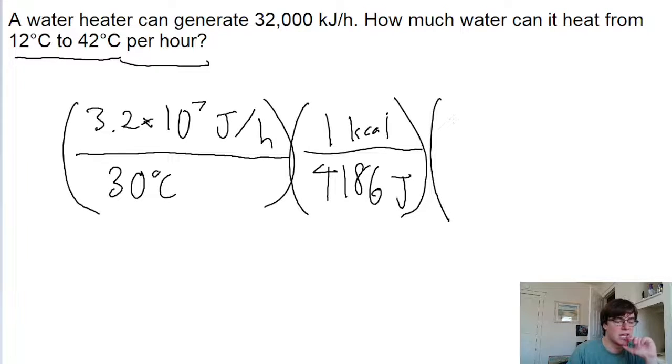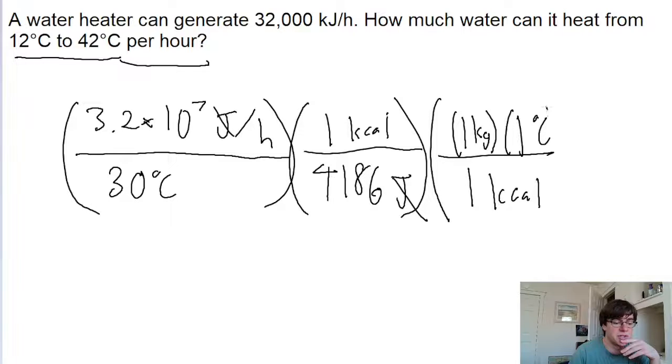And then that's going to convert from joules into kilocalories. And then to get this from kilocalories into mass, we use the fact that one kilocalorie is the amount of energy it takes to raise one kilogram of water by one degree Celsius.